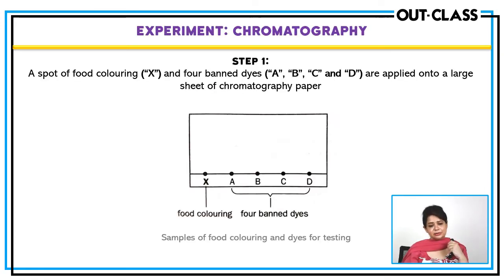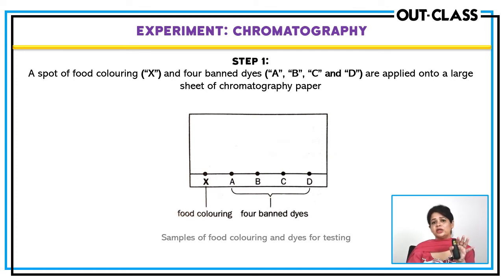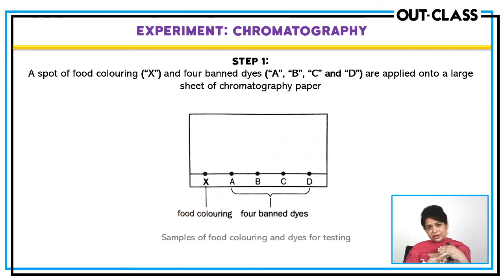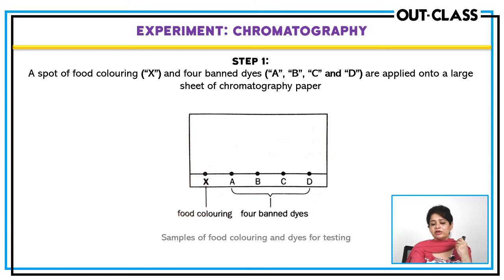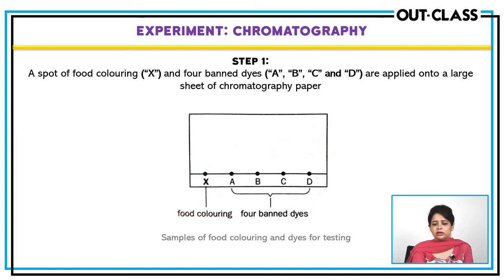Let's do a practical experiment. We have a spot of food colouring X and four known dyes A, B, C, and D. We want to check whether food colour X contains any of these dyes, because many chemical food colours are carcinogens that can cause cancer — food colours should not be harmful to health. We perform chromatography: take a filter paper, draw a start line with pencil, and place spots of X, A, B, C, and D on the start line separately.